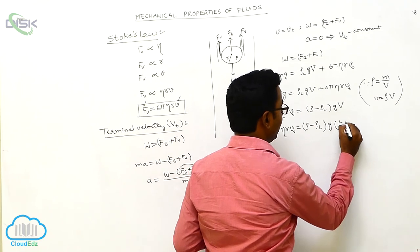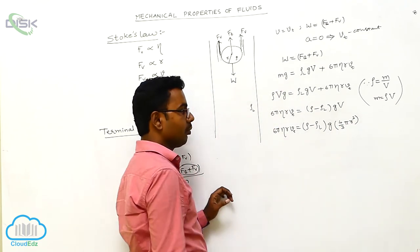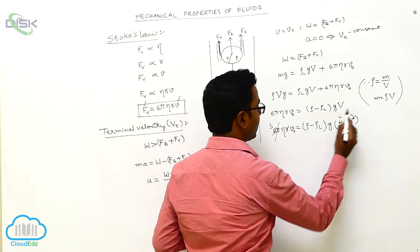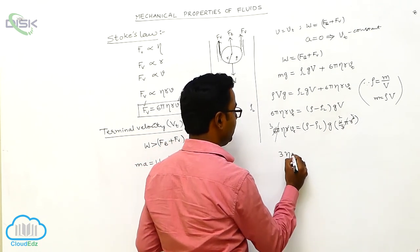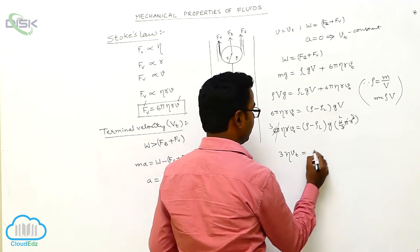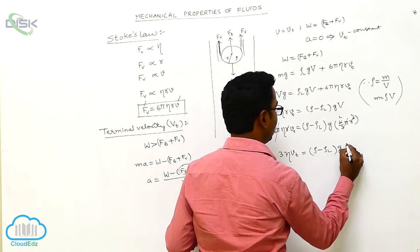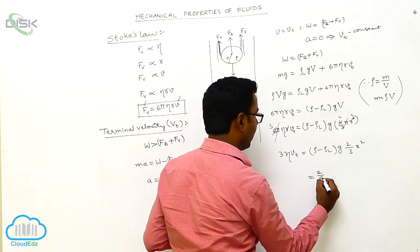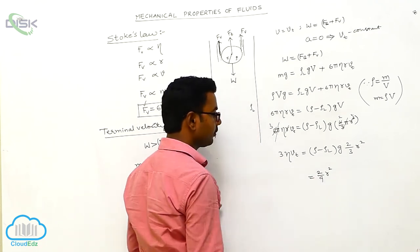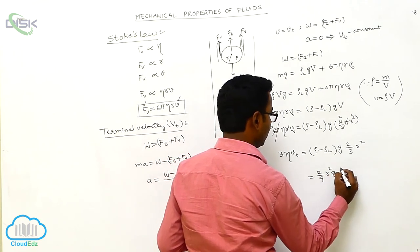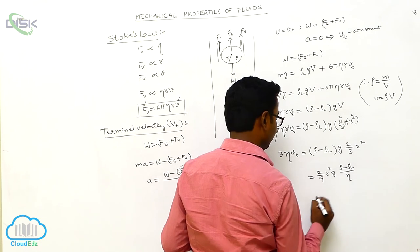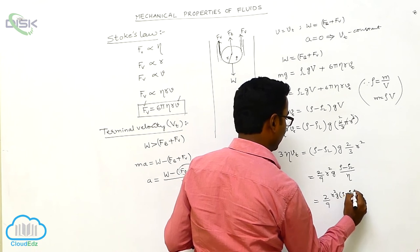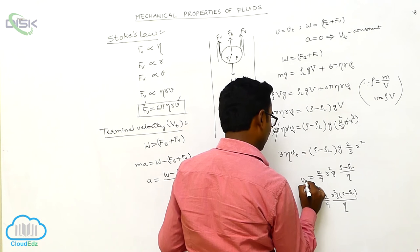Volume of the sphere V = (4/3)π·R³. Substituting and cancelling pi and one factor of R on both sides: 3·eta·Vt = (rho − rho_L)·g·(2/3)·R². Solving, Vt = (2/9)·R²·g·(rho − rho_L) / eta. This is the formula for terminal velocity.